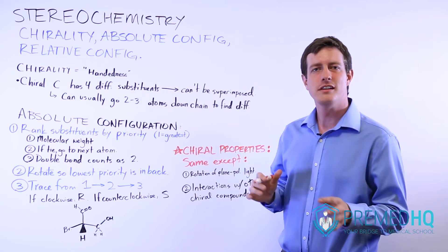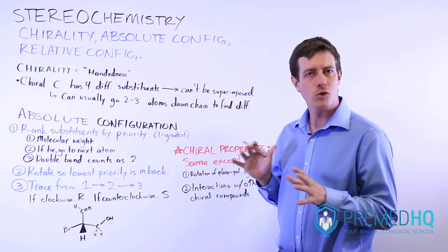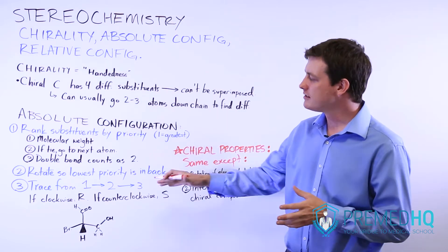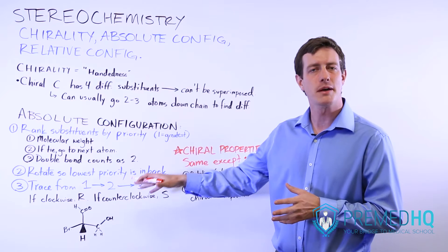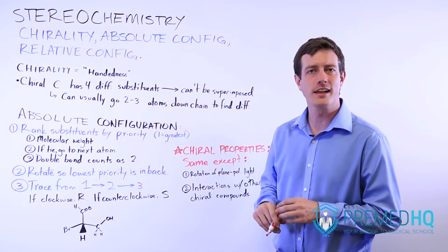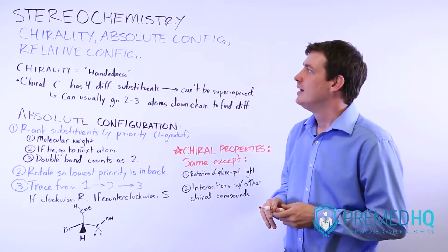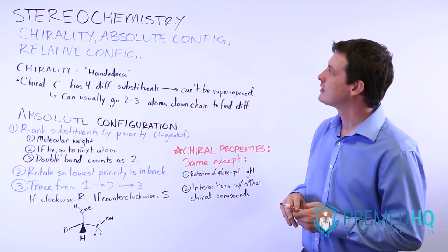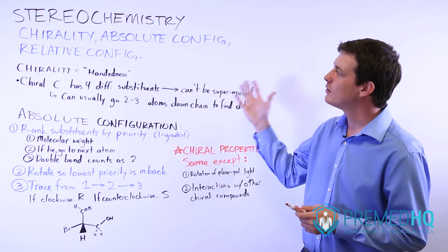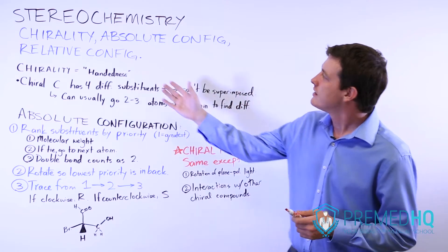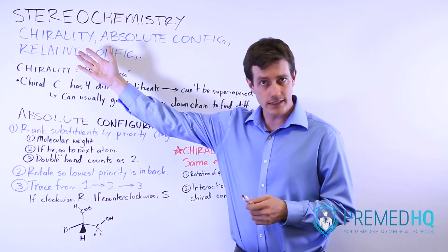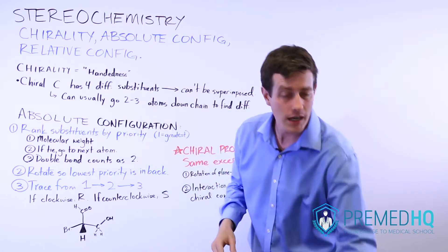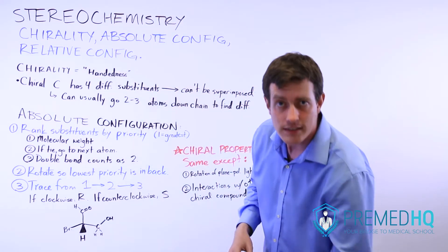Stereochemistry deals with the geometric orientation of bonds and different compounds within organic chemistry. When you're dealing with stereochemistry, the first thing to be aware of is chirality. Chirality can be described as handedness.